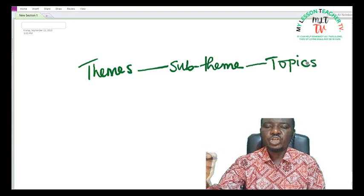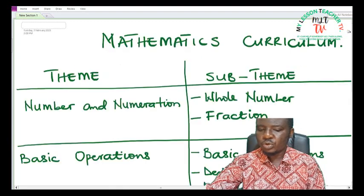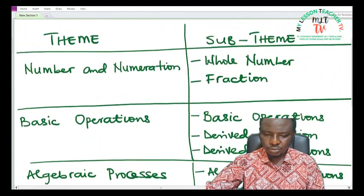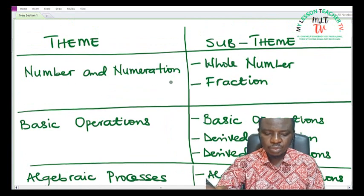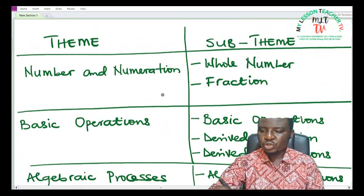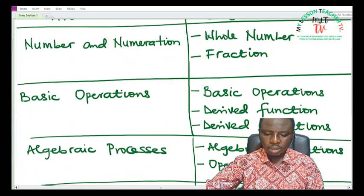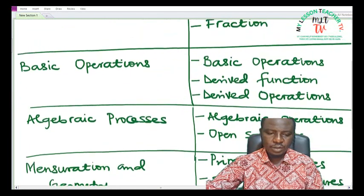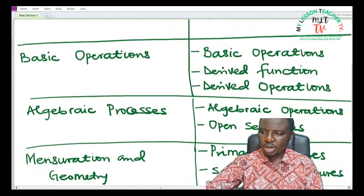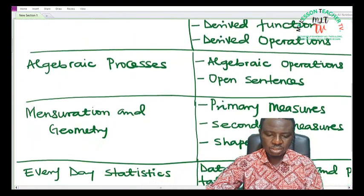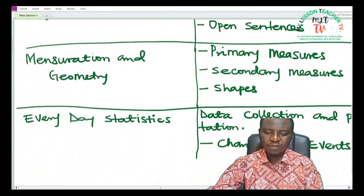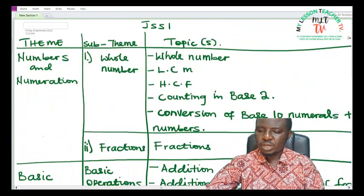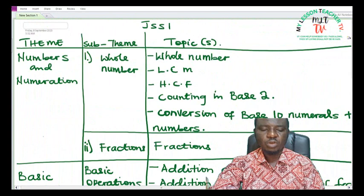For those of you in junior secondary one, we have about six themes. Theme number one is number and numeration, and under number and numeration we have sub-themes as whole numbers and fractions. We also have basic operations as the second theme, algebraic processes as the third theme, mensuration and geometry as the fourth theme, and everyday statistics. Now let me give you a rundown of the themes, the sub-themes and the topics.